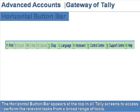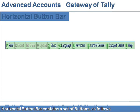Horizontal button bar. The horizontal button bar appears at the top in all Tally screens to access or perform the relevant task from a broad range of tools. The horizontal button bar contains a set of buttons.